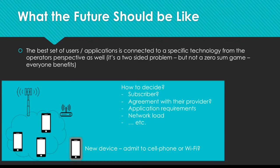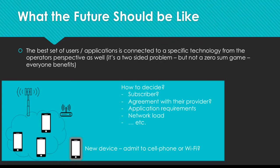On the operator side — the people running the networks we all use — they also have an interest in matching the best possible users to the best possible technology and application. For example, a lot of cell phone companies are now deploying Wi-Fi networks to offload from their cell phone towers, and they have a problem figuring out which users to keep on the cell towers and which to push onto Wi-Fi. There's almost a matching process between users trying to pick which technology to connect to, and operators trying to maintain an optimal set of users connected to certain technologies. It's not a zero-sum game — there's a mutual interest in finding a good match.